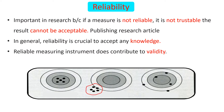In the second scenario, the dots are close to each other, so it is consistent and reliable, but it is found outside the inner circle, so it is not valid.